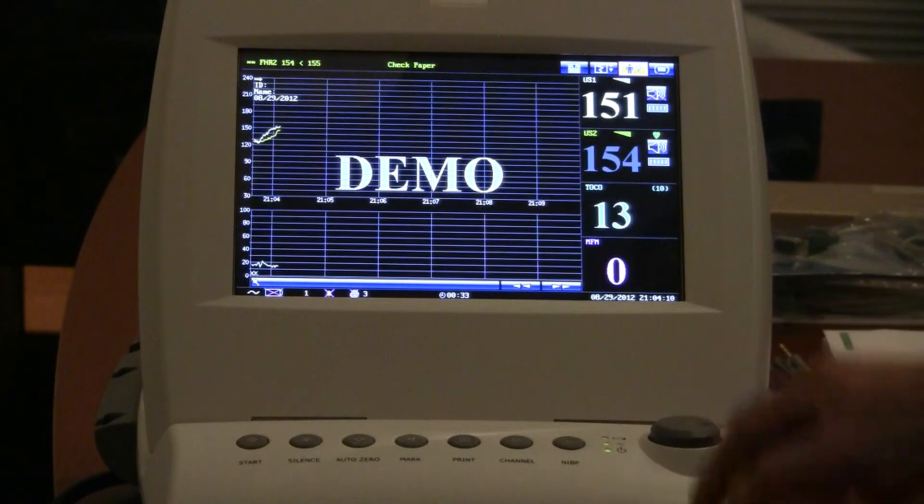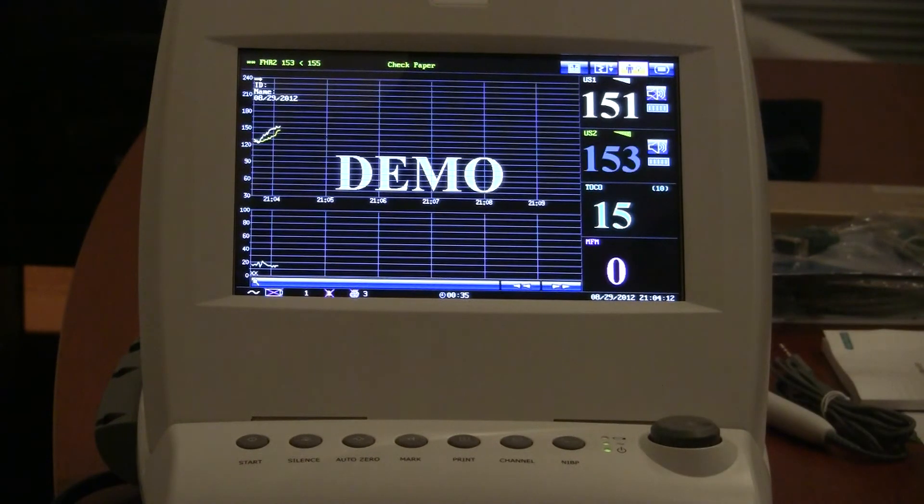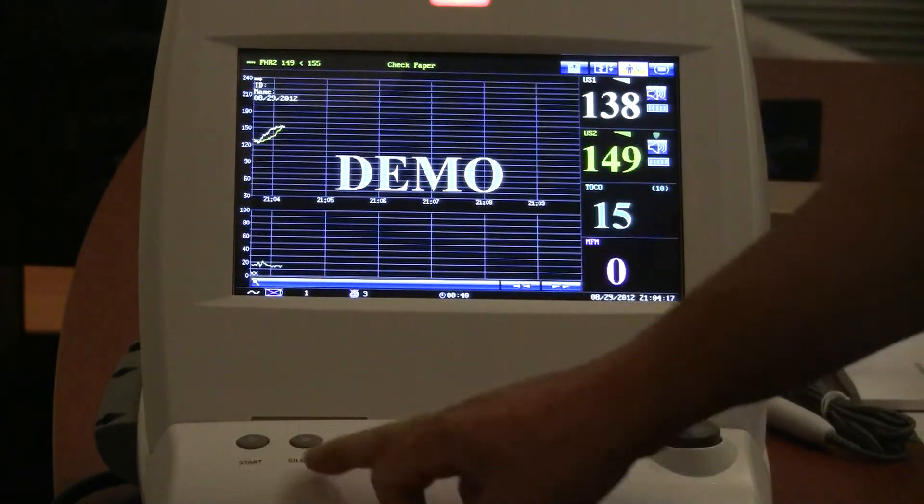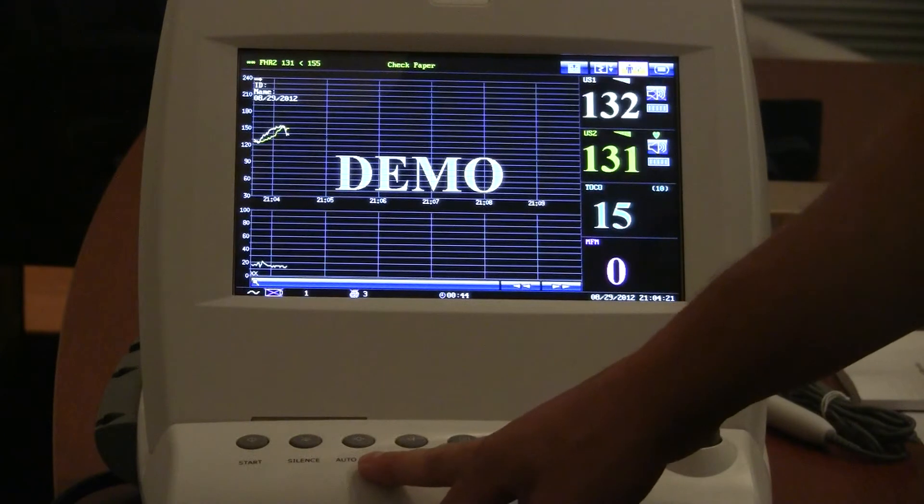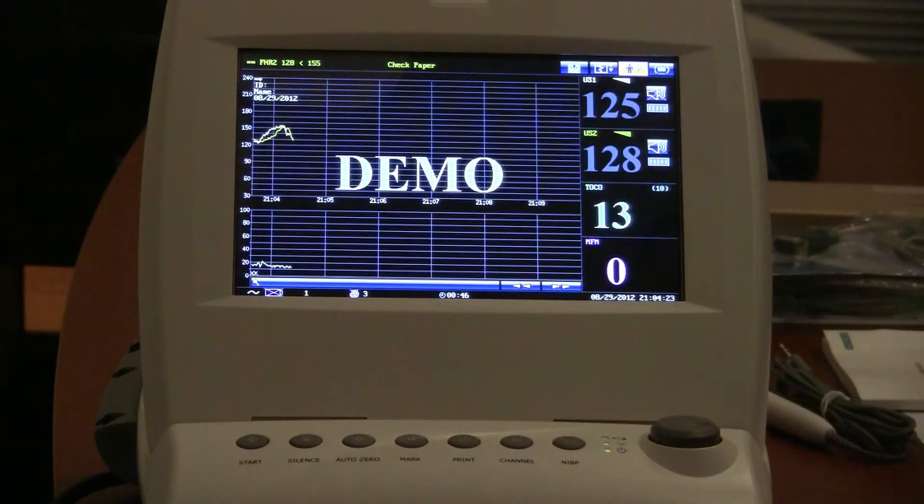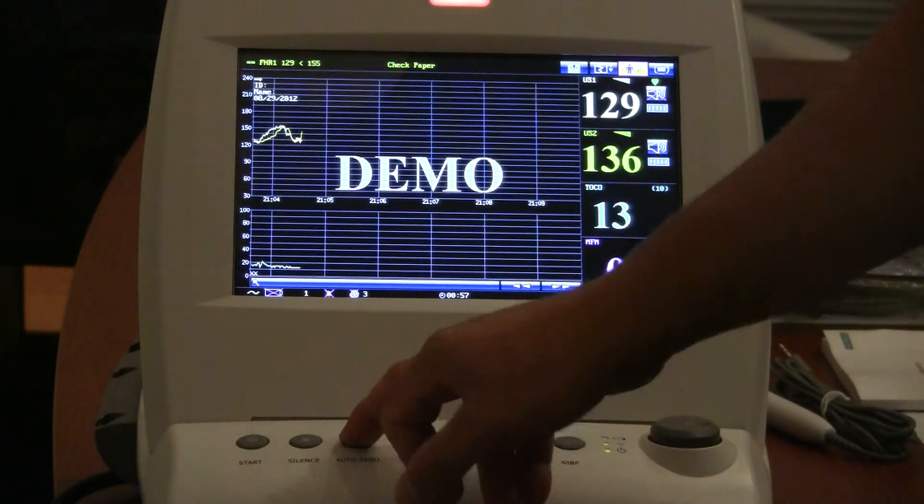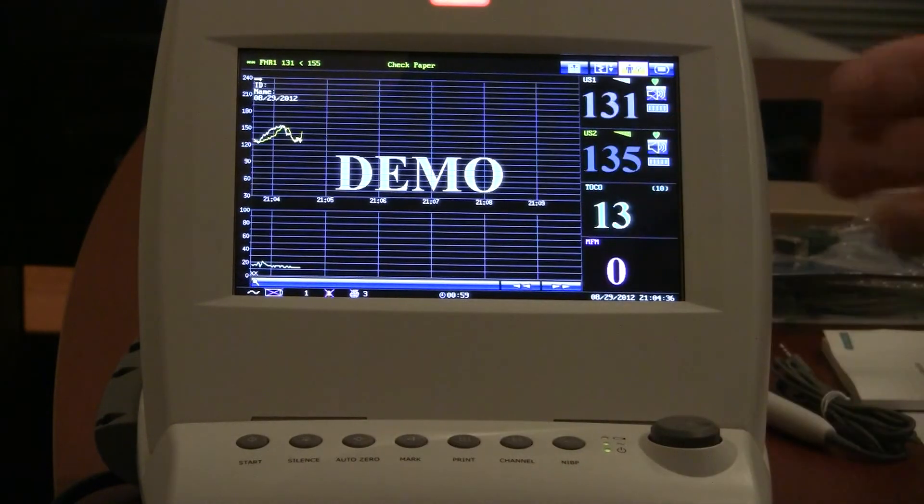We'll go through some more of the buttons. We talked about the start/stop button here. This is our silence for our alarms. This is our auto zero, so that when we place the TOKO on mom, we want to, obviously the pressure of how you apply that belt is going to vary every time you put it on. So once you put the TOKO on, you want to auto zero, and that will kind of calibrate that pressure based upon that mom so that it knows to pick up the contractions appropriately.